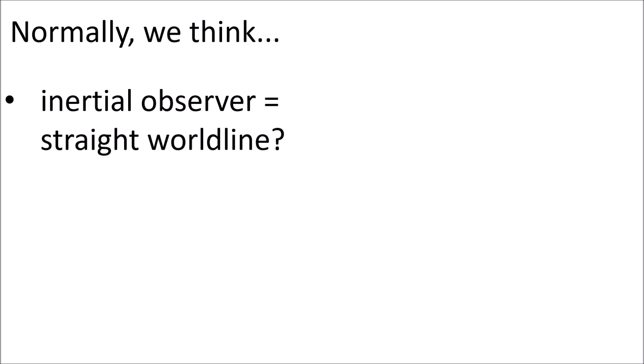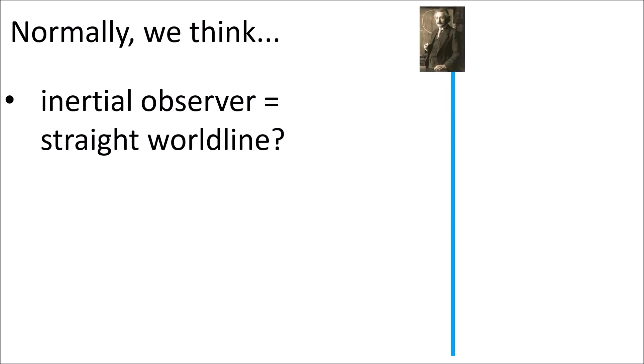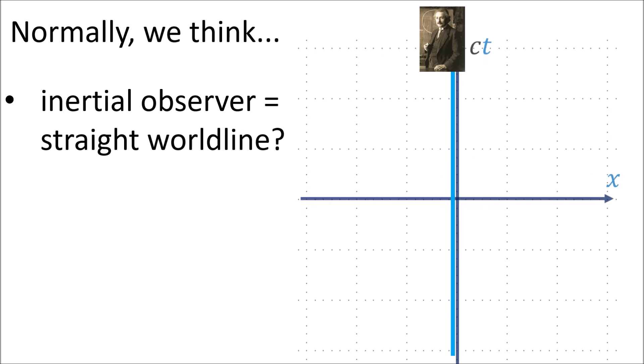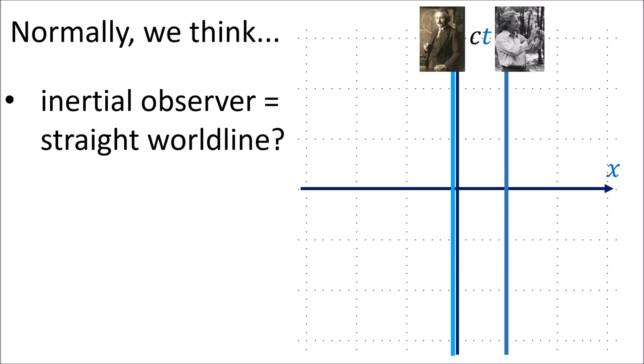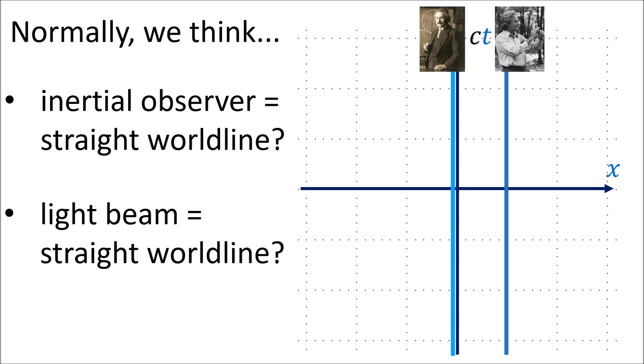We normally think of inertial observers as having straight world lines on a spacetime diagram. For example, if Einstein is an inertial observer, and we take a look at a spacetime diagram from his perspective, then if physicist Richard Feynman is standing stationary with respect to Einstein some distance away, then Feynman's world line will be a straight vertical world line next to Einstein's. We also normally think of beams of light as having straight world lines — for example, a beam of light moving left to right has a straight world line angled at 45 degrees.